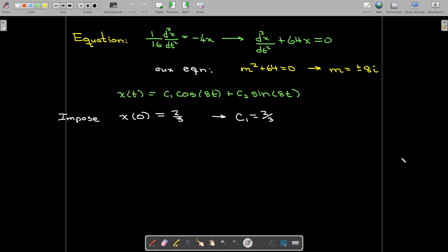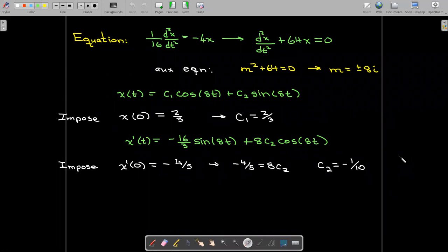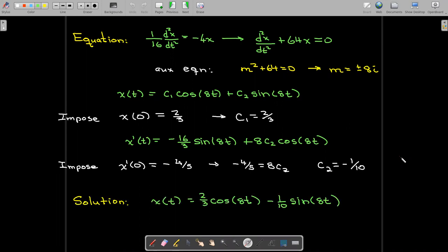So we know that the initial position is two-thirds feet below the equilibrium position. And that tells us that the constant c1 should be two-thirds. To impose the second initial condition, I need the derivative. And so the second initial condition says that it was released with a velocity of four-fifths feet per second upward. That is going to mean that we have a negative initial velocity, because remember downward is positive in this model. And so then we can calculate the value of c2. And there's our solution, the equation of motion.